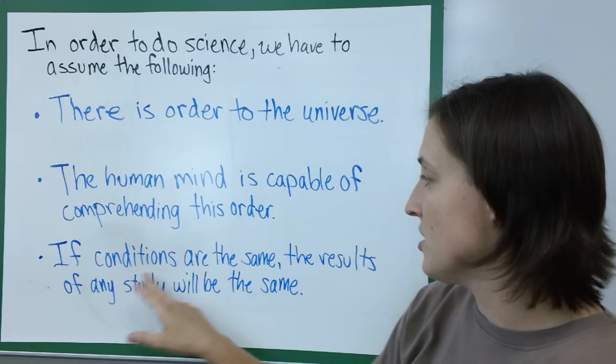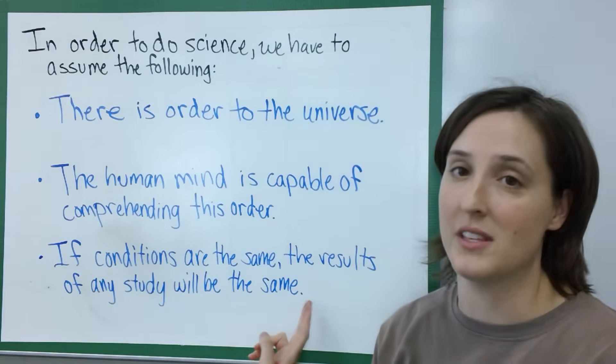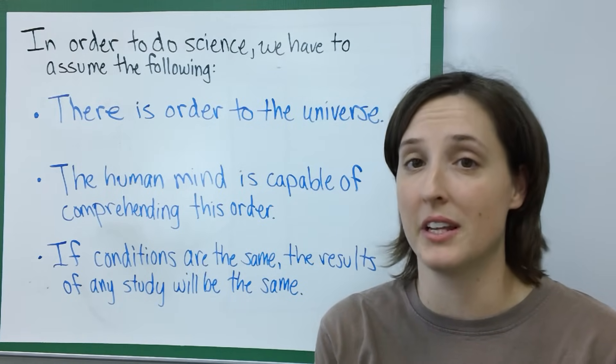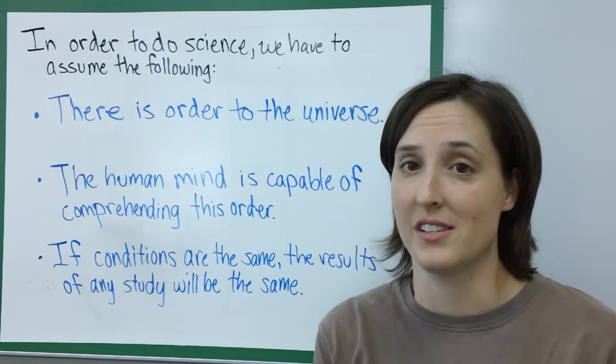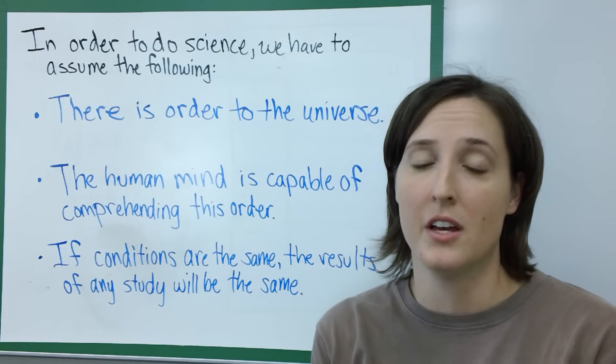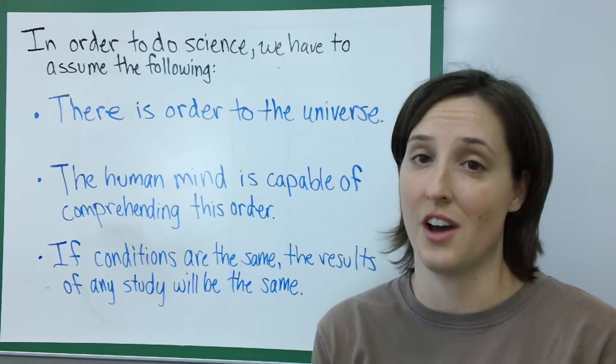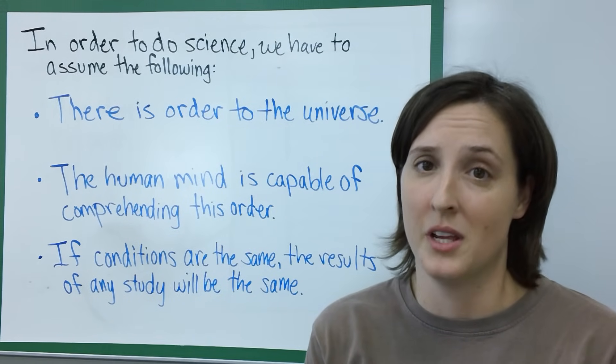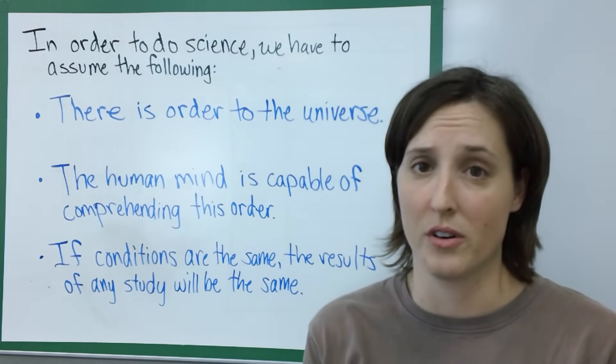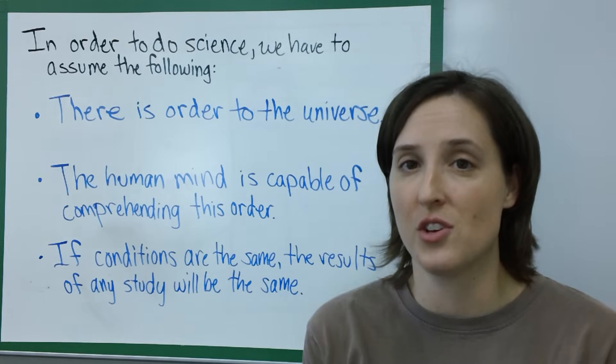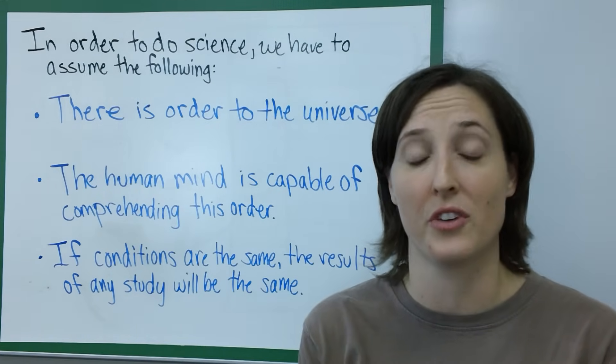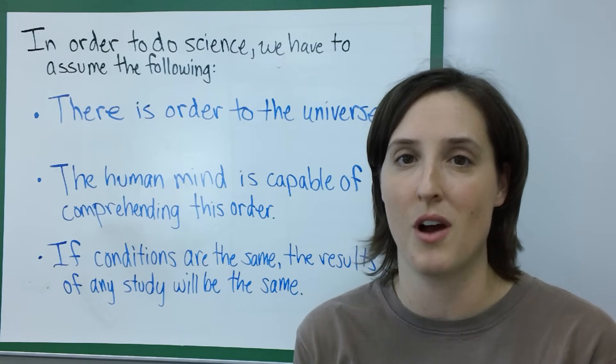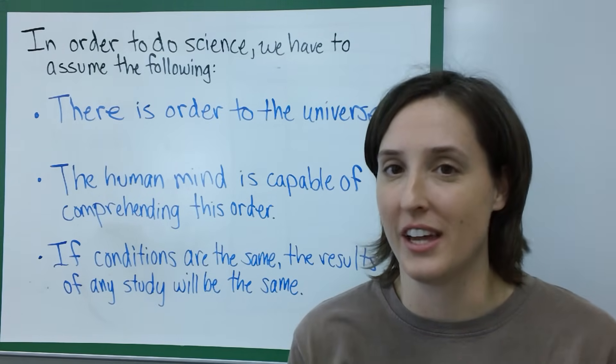The last thing you have to assume is that if conditions are the same, the results of any study will be the same. This is how you can tell a good scientific experiment is its repeatability. If you can take an experiment from a scientist and duplicate that experiment in your lab, you should probably get the same results. If you don't, either something is wrong with your experiment or theirs. Scientists have to test each other, and this is really important in science. If you have a scientist claiming a miracle cure for cancer and other researchers don't get the same results, then you have a problem. So it's important to double check your work.